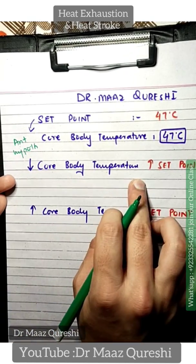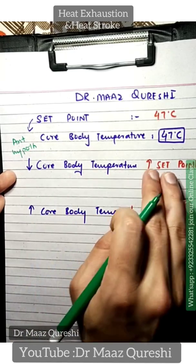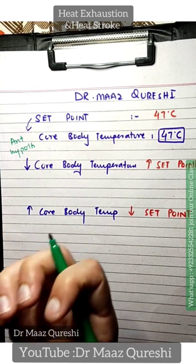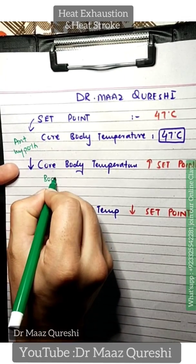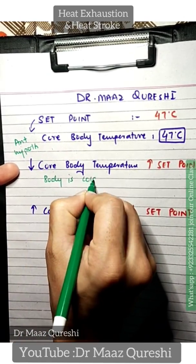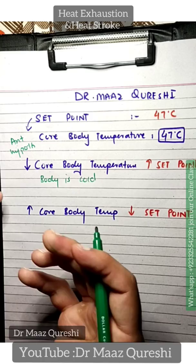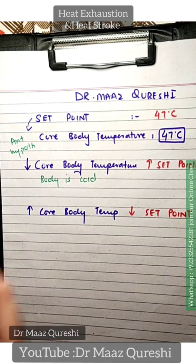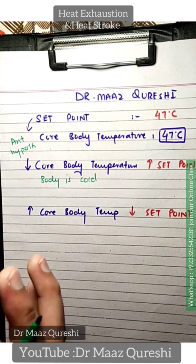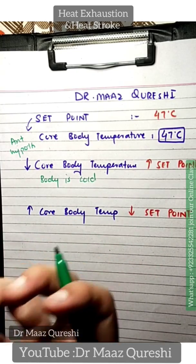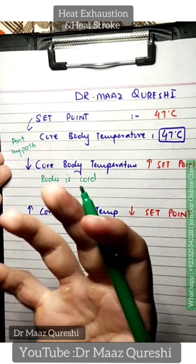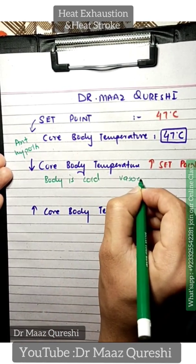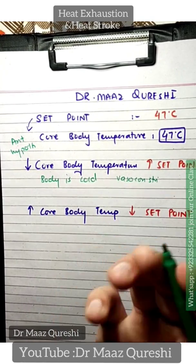For example, if the core body temperature is low and the set point is high, that means your body is cold. So, the posterior hypothalamus is activated, and the heat-generating mechanisms are activated — such as vasoconstriction or shivering.